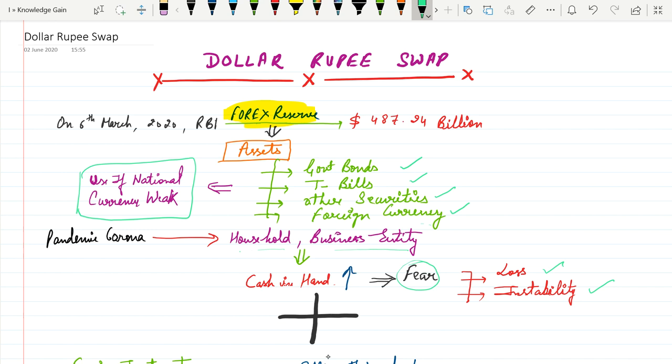Recently on 6 March 2020, RBI said that the level of forex reserve at 487.24 billion dollars remains comfortable to meet any emergency. What are forex reserves? These are basically assets for the government in the form of government bonds, treasury bills, as well as securities and foreign currency. These assets are used when our national currency weakens.